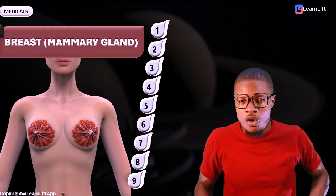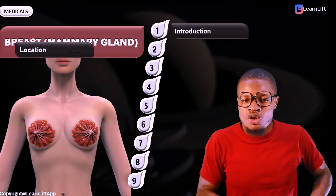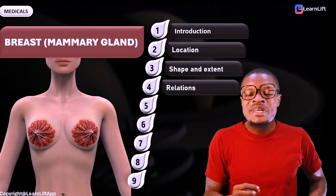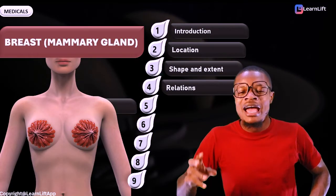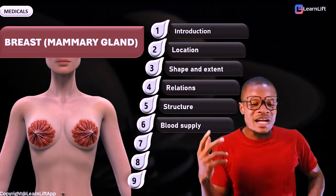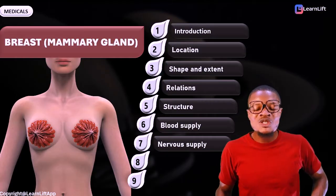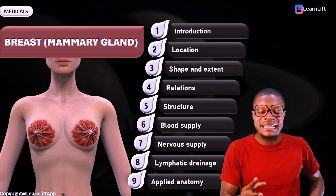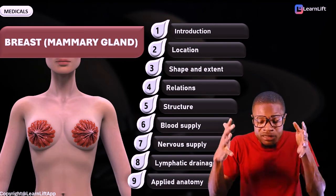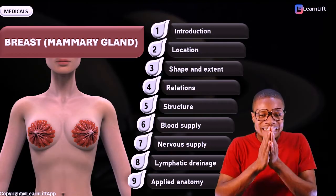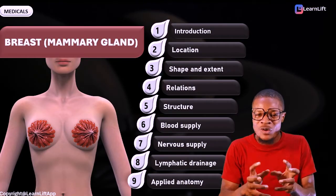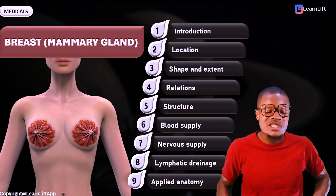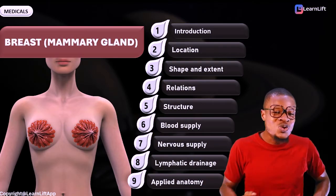In this class, I'm going to be taking you on a total of nine topics. If they ask you to write on the gross anatomy of the breast or mammary gland, they are expecting you to cover all nine: introduction to the breast, location, shape and extent, relations, structures, blood supply, nervous supply, lymphatic drainage, and applied anatomy of the breast.